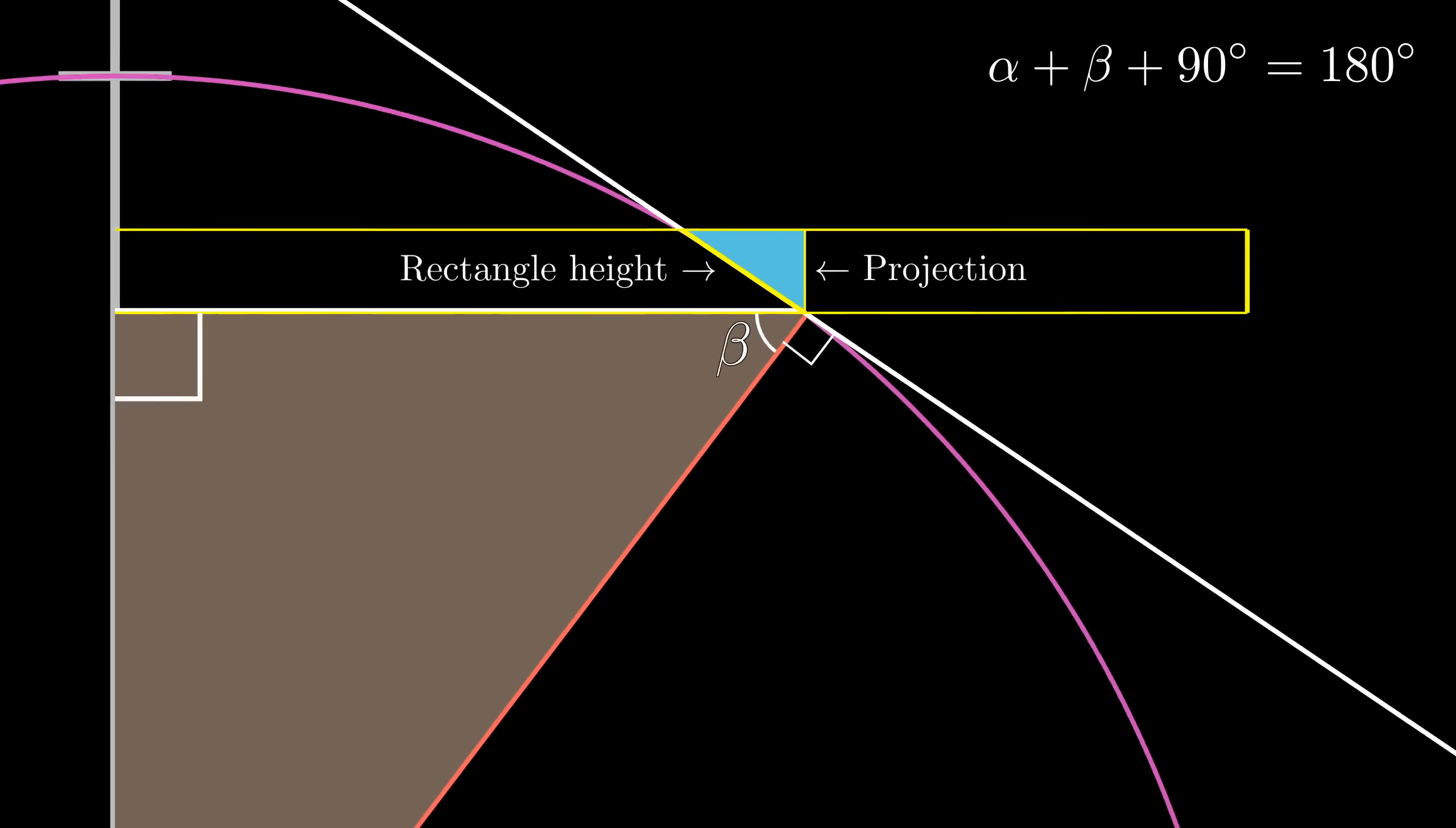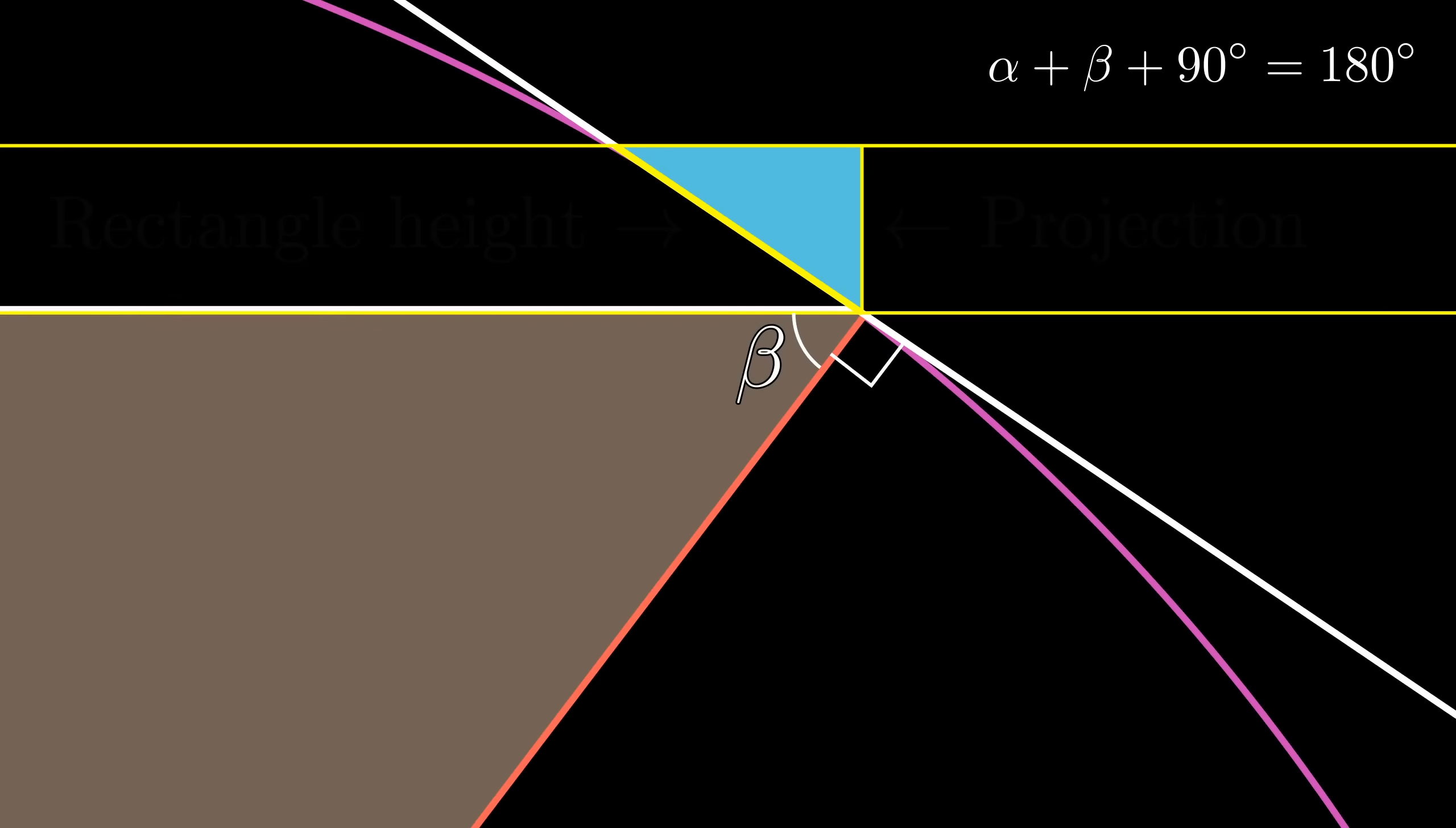Now let's zoom in on our little triangle and see if we can figure out what its angles might be. Notice this 90 degree angle, which comes from the radius being perpendicular to the tangent, and how when it's combined with this beta here and some other little angle, it forms a straight line.